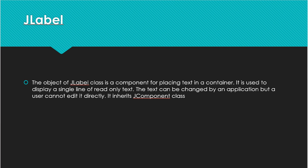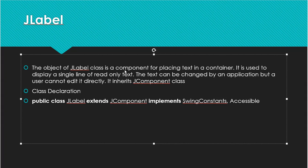Now we look at the class declaration of JLabel. The class declaration is: public class JLabel extends JComponent. JLabel extends JComponent and implements two interfaces: SwingConstants and Accessible. This is the class declaration of JLabel.